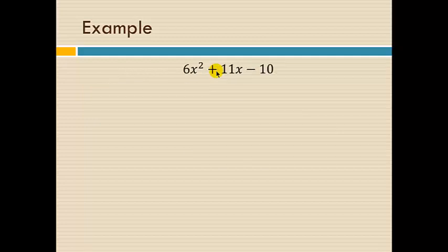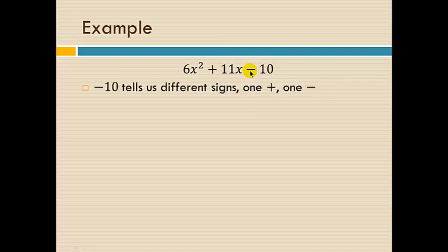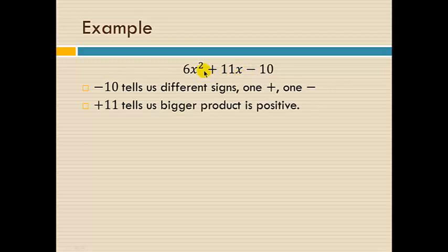A third example would be 6x squared plus 11x minus 10. Now the last sign is negative. Because the last sign is negative, that tells us our factors have different signs. One is positive, one is negative. To help us decide which is which, we look at the other sign where we see a positive 11. This tells us the bigger product is positive.